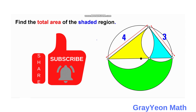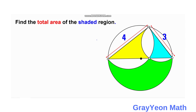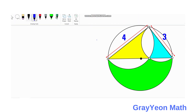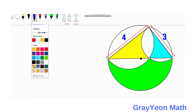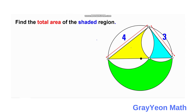This triangle has one side that is the diameter of the largest circle. We are required to find the total area of the shaded region. To eliminate the unshaded parts, we need to label these regions as A, B, C, D, E, and F. We will not be concerned with the white portions at the top, so we concentrate on these labeled portions.